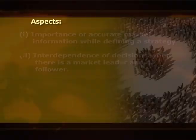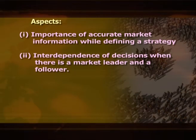In this game, the leader has decided not to behave as in the Cournot model. However, it is not certain whether the leader would produce more and make more profits than the follower, because production will be larger for the firm with lower marginal cost. Total production will be greater and prices lower, but player 1 will be better off than player 2. This highlights two aspects: first, the importance of accurate market information while defining a strategy, and second, the interdependence of decisions when there is a market leader and a follower.